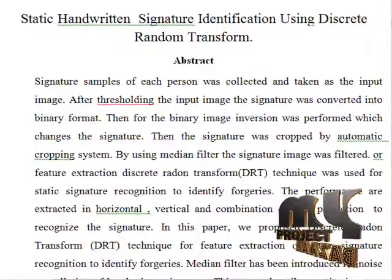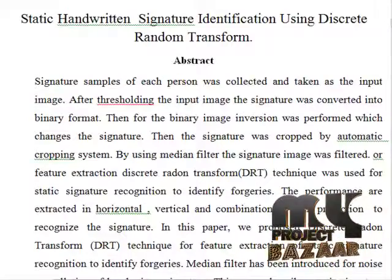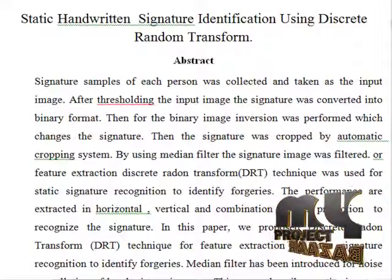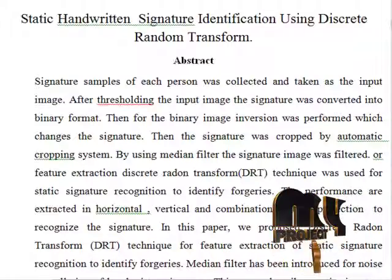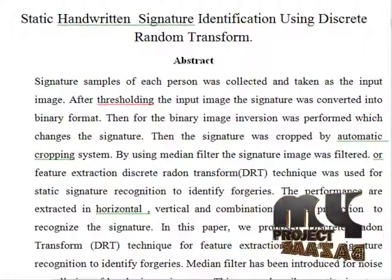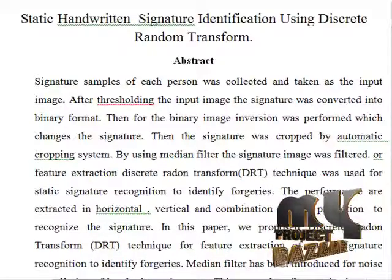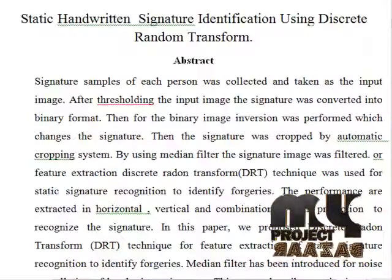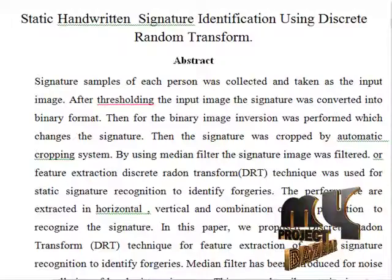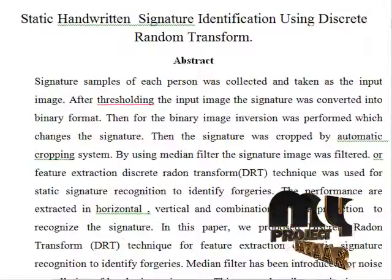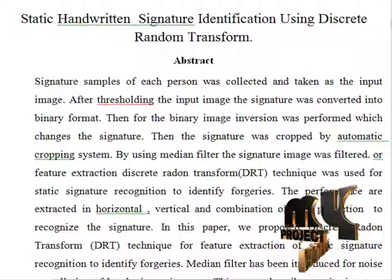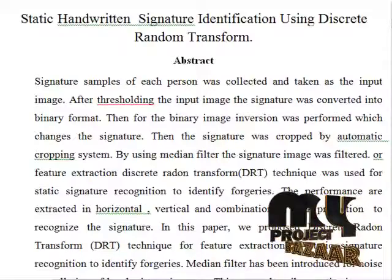The performance features are extracted in horizontal, vertical, and a combination of both projections to recognize the signature. First, the signature samples of each person were collected and taken as the input image. In order to improve the quality of the images, we employ filtering operations. Median filter is used for filtering because it is used for smoothing and removal of noise. Then we transfer the input image to a binary image. Here, static handwritten signatures were recognized to identify forgery images.